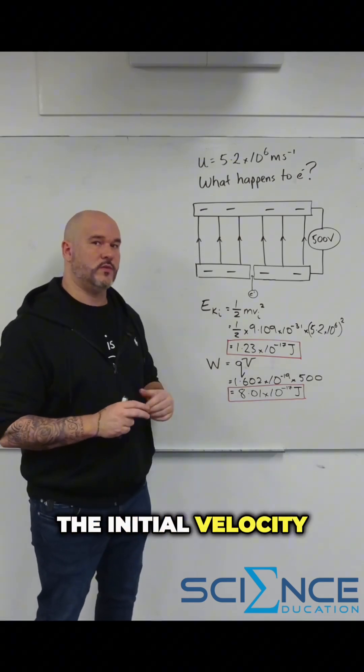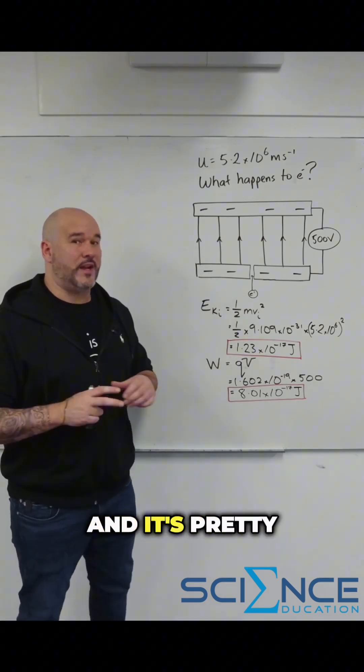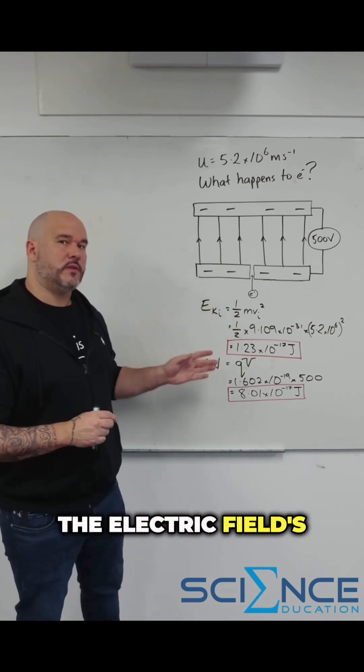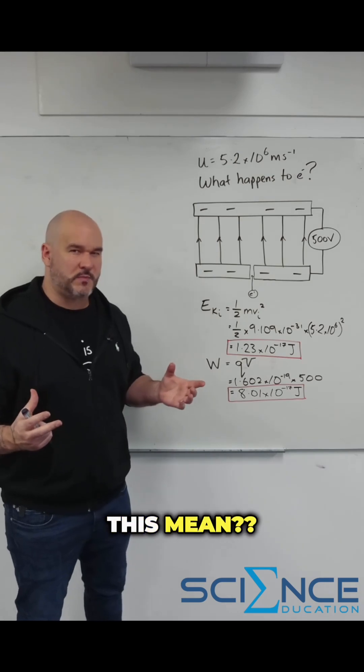So we've now determined the initial velocity of the electron and the capacity of the electric field to do work. And it's pretty obvious to see the electric field's capacity to do work is much larger than the initial kinetic energy of the electron. So what does this mean?